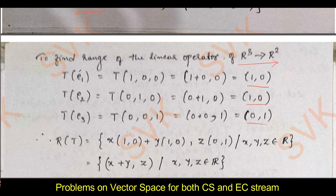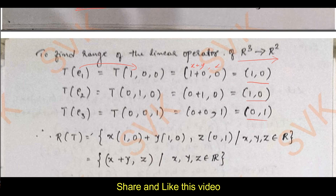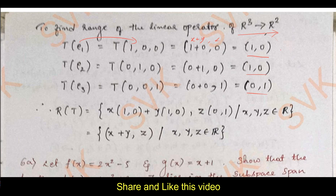The range of T can be written as x·(1,0) + y·(1,0) + z·(0,1), which gives (x+y, z) such that x, y, z ∈ R. This is the range of the given transformation. This is how we find the range for any such problem.